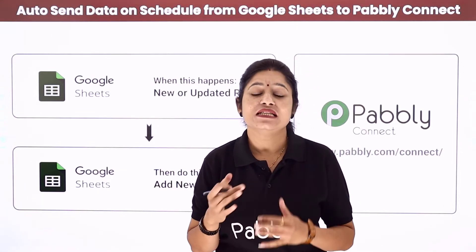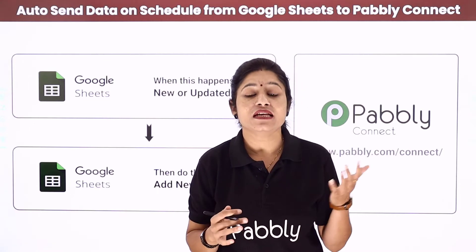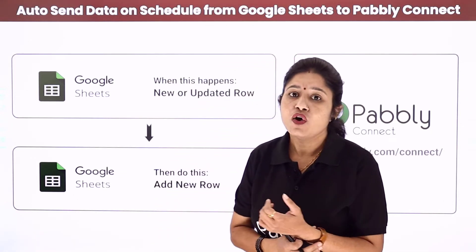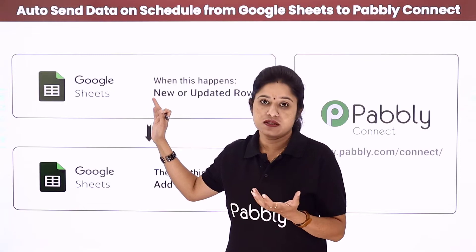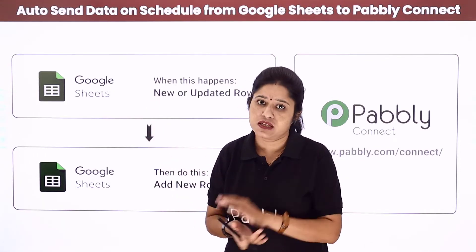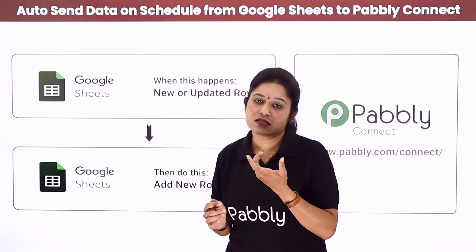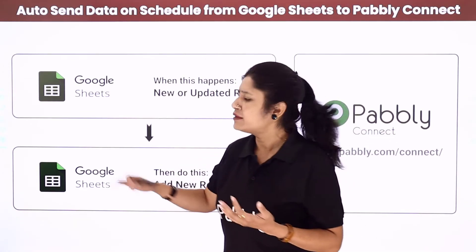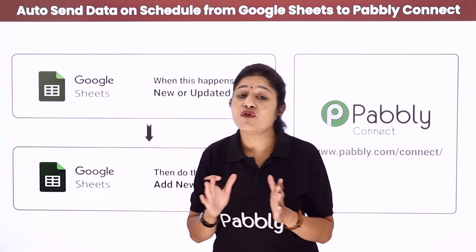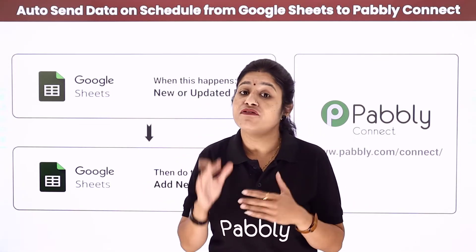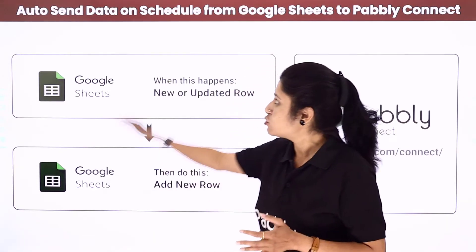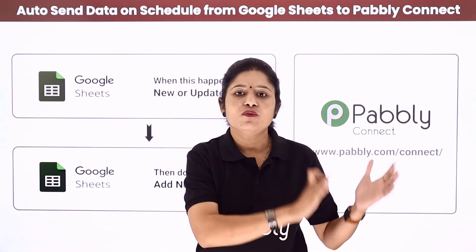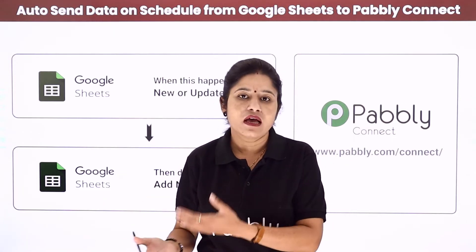This feature will help us in sending data from Google Sheets to Pabbly Connect after every one hour. For example, if you are a business owner using Google Sheets to maintain your customer records — entering name, email address, phone number and other details — and you want to use those details for sending a mail, a WhatsApp message, or any other purpose using another application, you can send that data after every one hour using the auto send data on schedule feature, so that the data is captured every hour and sent to Pabbly Connect for future integrations.